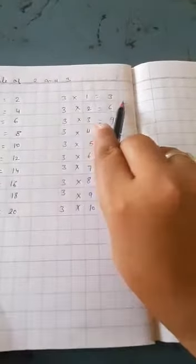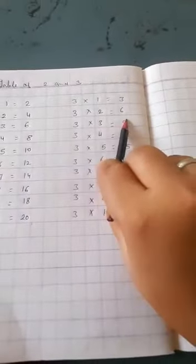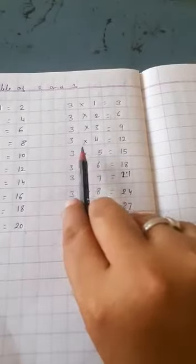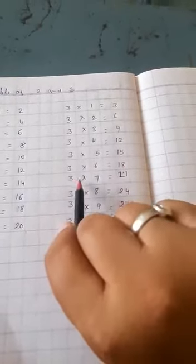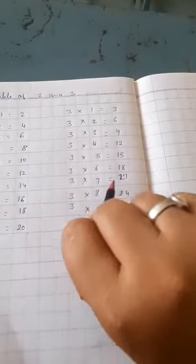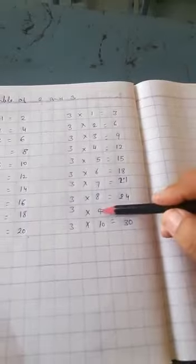3 ones are 3, 3 twos are 6, 3 threes are 9, 3 fours are 12, 3 fives are 15, 3 sixes are 18, 3 sevens are 21, 3 eights are 24, 3 nines are 27, 3 tens are 30.